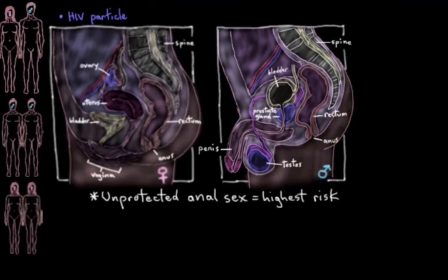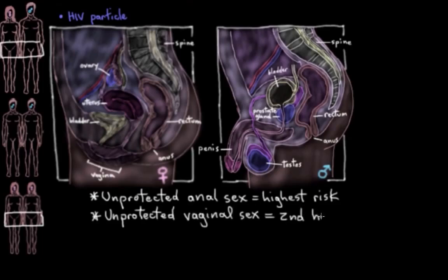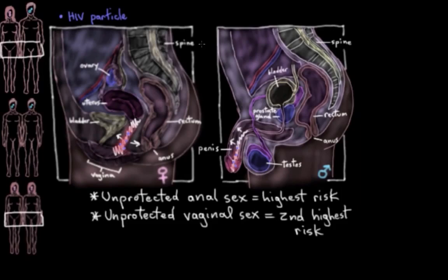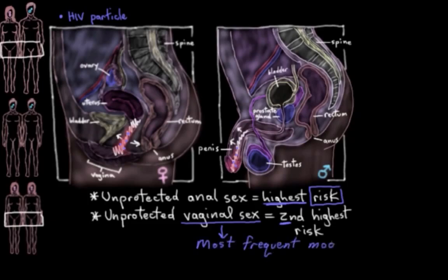Unprotected vaginal sex is the second highest risk sexual behavior, because there's exposure of semen and vaginal fluid to mucous membranes, and there could be some blood involved as well. However, vaginal sex is the way HIV is transmitted most frequently overall, because overall more people have vaginal sex than anal sex.